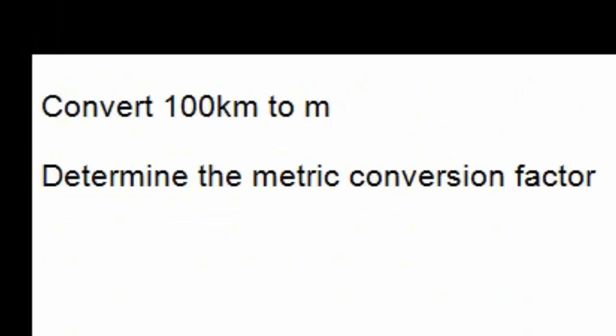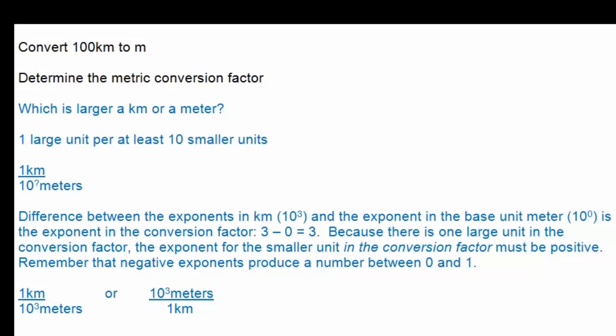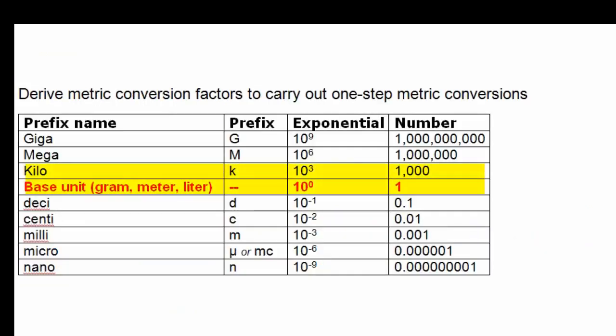Let's start with a problem where we need to convert 100 kilometers to meters. First, we need to determine the metric conversion factor between meters and kilometers. First ask: which is the larger unit, a kilometer or a meter? Use the table to help you determine. The meter is a base unit associated with an exponent of zero, or the number one. Kilo is associated with an exponent of three, or one thousand. So a kilometer is larger than a meter.